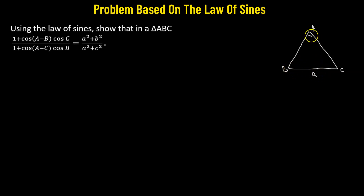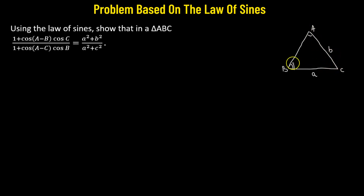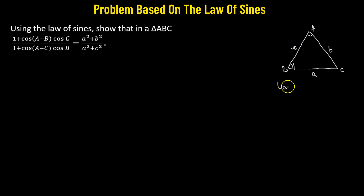The side opposite to angle B is AC, represented by lowercase b. The side opposite to angle C is AB, represented by lowercase c. Now let's state the Law of Sines.